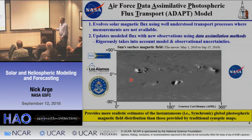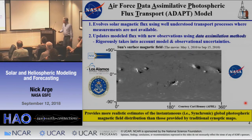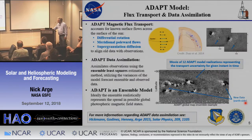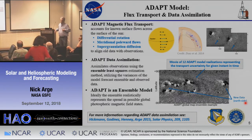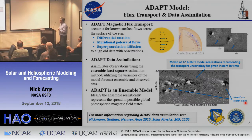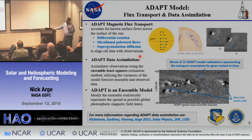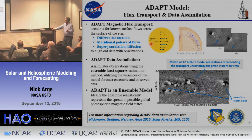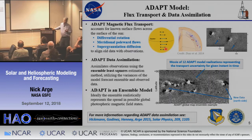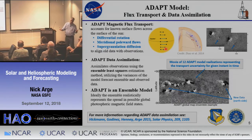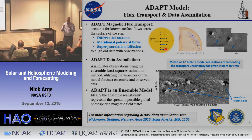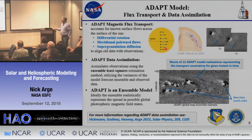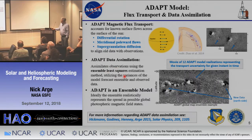The goal is to provide instantaneous or synchronic maps of the global magnetic field, because ideally that should produce better model inputs. Of course, we have the problem that you can't see the far side of the sun — hopefully Solar Orbiter will solve that. The model is mostly funded by the Air Force with collaborators from NSO, Los Alamos, and some NASA funding. The ADAPT model is a flux transport model with proper data assimilation, accounting for differential rotation, meridional flows that drag flux up to the poles, and supergranule diffusion.